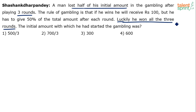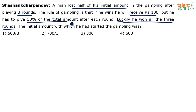When you have won three rounds, you should make money. But this person lost money because of the gambling rule: if you win, you receive 100 rupees, but you have to give back 50% of the total amount after each round. So while you earn 100 rupees, you give back half the total — and because of this, the person lost half his wealth even after winning all three rounds.